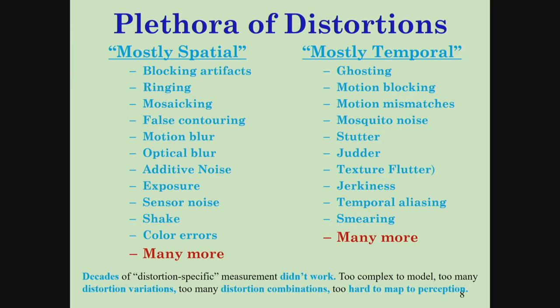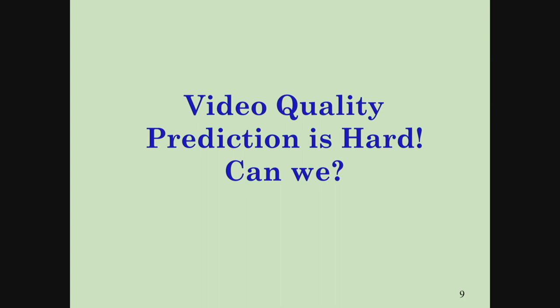This is a very incomplete list of distortions for which there are names that people have identified over the years. A lot of them are mostly spatial — if you look at a single frame, you'll say it's blurry or blocky or noisy. Other ones occur because this is video over time: you'll see it's jerky or you'll see something called stutter when you have too low a frame rate. Think of old movies that are just sort of discontinuous. These are very incomplete, and again, these can all combine together. You cannot hope to model it.